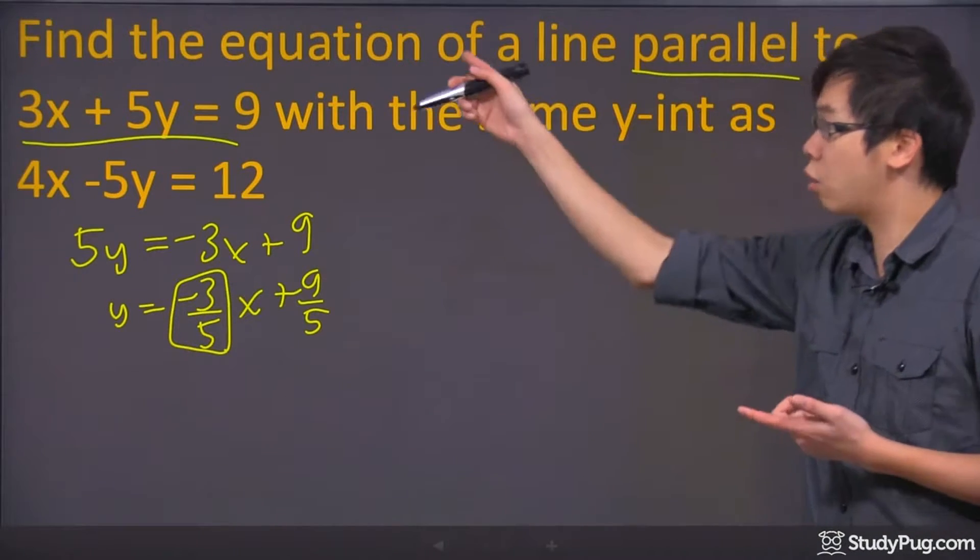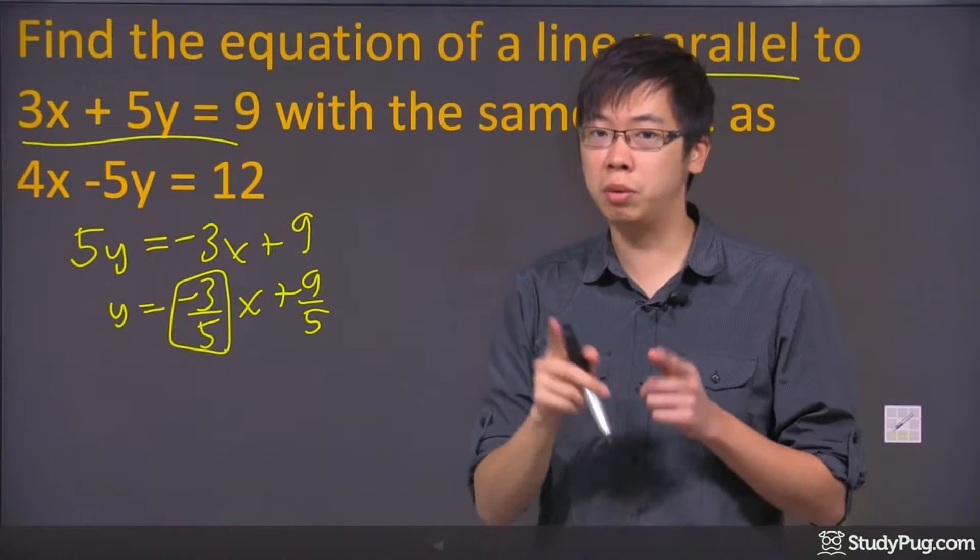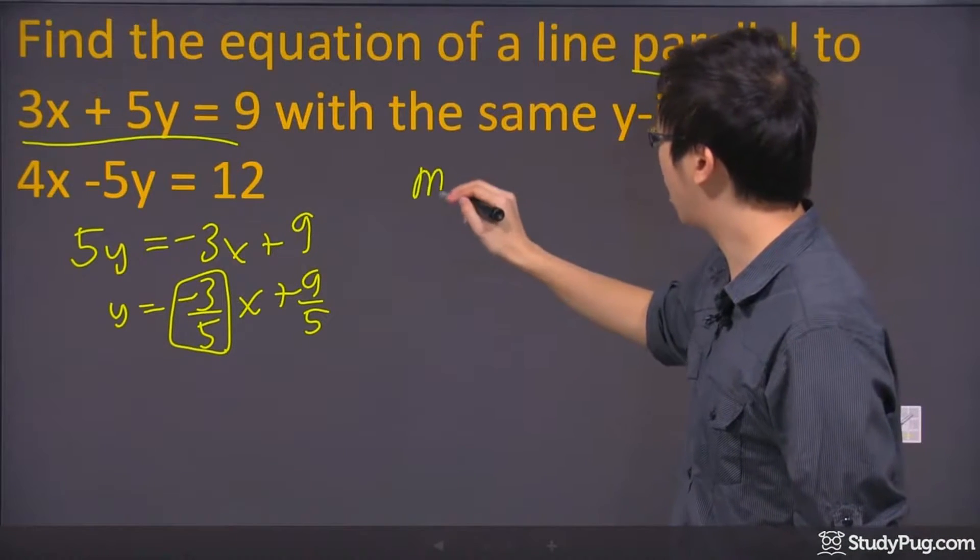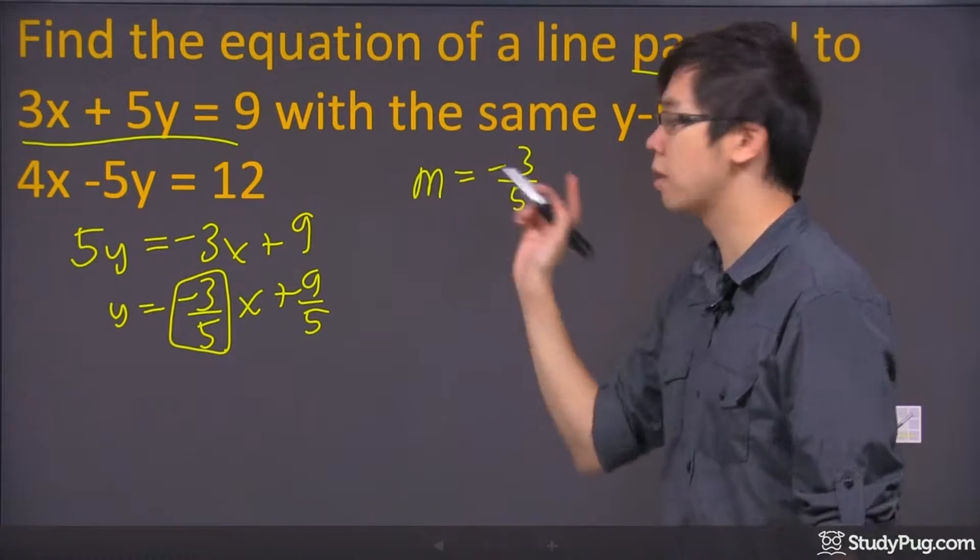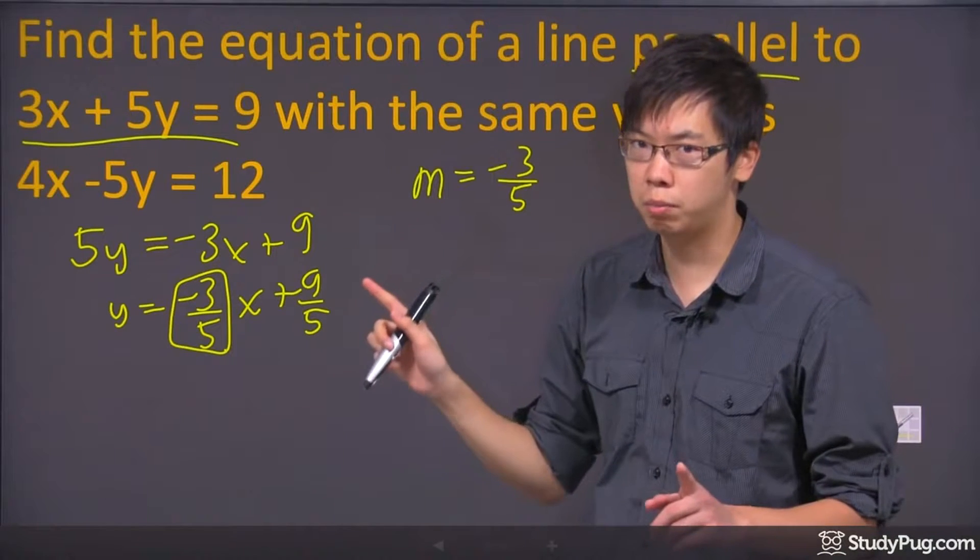Because we're looking for an equation that's parallel to this line equation. So then the slope is identical. So far I have the slope here ready to go. For the new equation, the slope is negative 3 over 5 because they're identical to each other, because they're parallel.